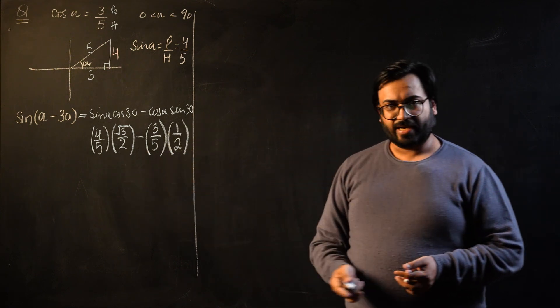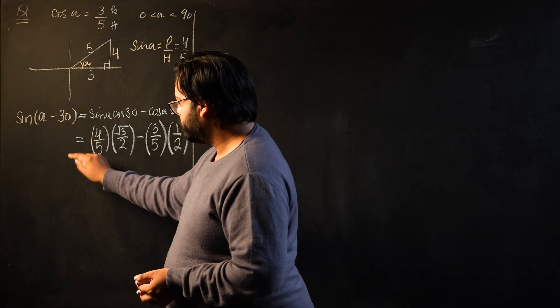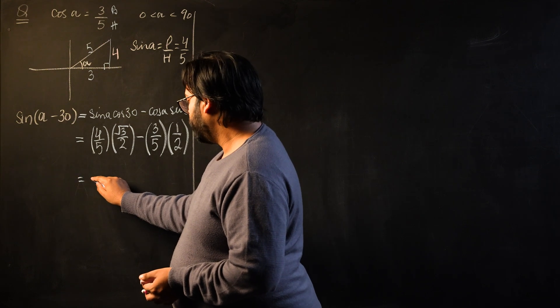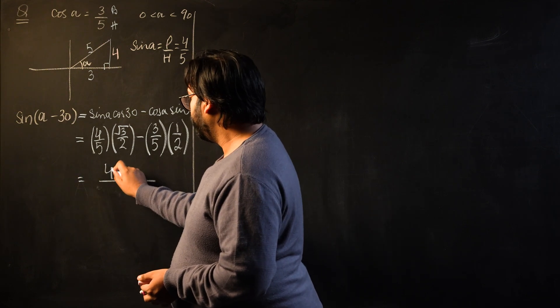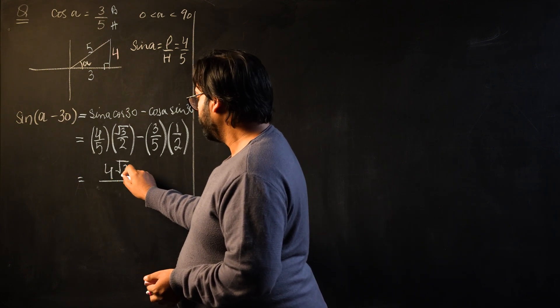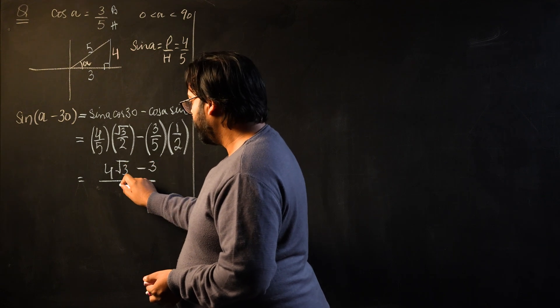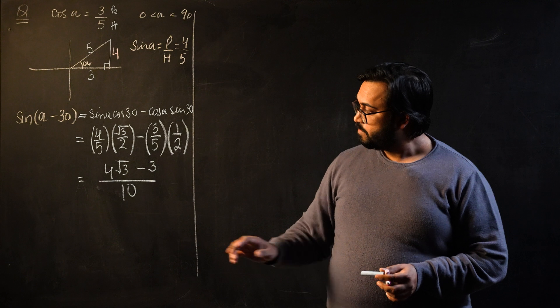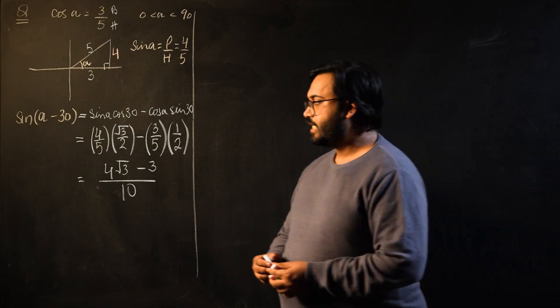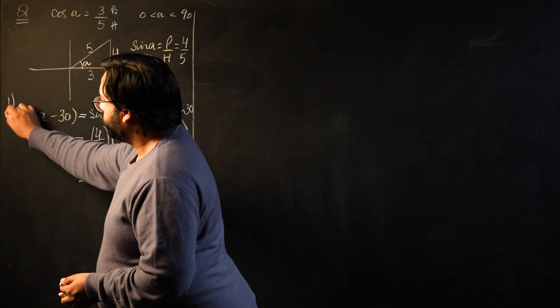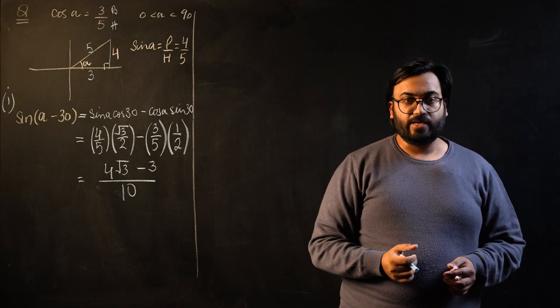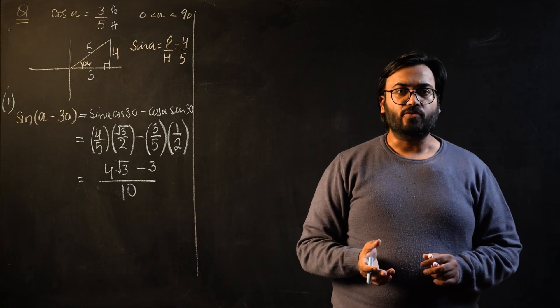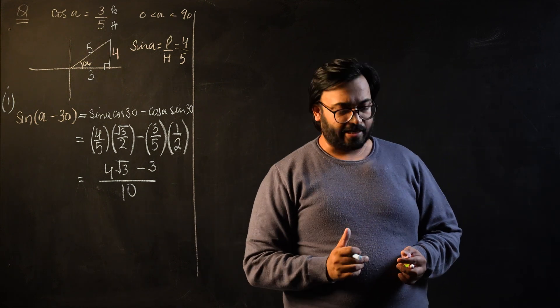So this is the final answer. We'll just simplify it a little bit. This would be (4√3 - 3)/10. So this is the final value for part A. This is sin(α - 30°). This is the exact value. We know whenever we are required to tell the exact value, you are not allowed to use calculators.